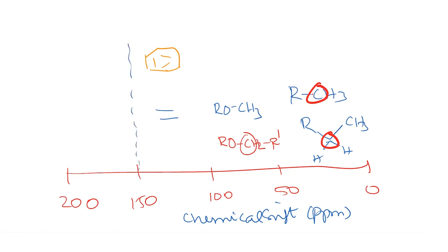The aromatic carbons show up between 100 and 150 ppm, and lastly the carbon attached to a carbonyl group typically shows up between 150 and 200 ppm. Together, recording both the proton NMR and the carbon NMR gives a very good idea of the functional groups and the local environment, and this is very useful in determining the structures of molecules.